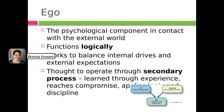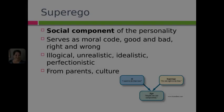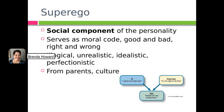The ego is the outward-facing part of our psyche that functions logically. It works to balance internal drives and external expectations, operating through secondary process thinking — ways we learn to think through experience, to compromise and use discipline. The superego is like the angel on our shoulder, while the id is the devil. It's our social component that serves as our moral code — always asking what this would look like if carried to its logical conclusion. It's unrealistic, idealistic, and perfectionistic.